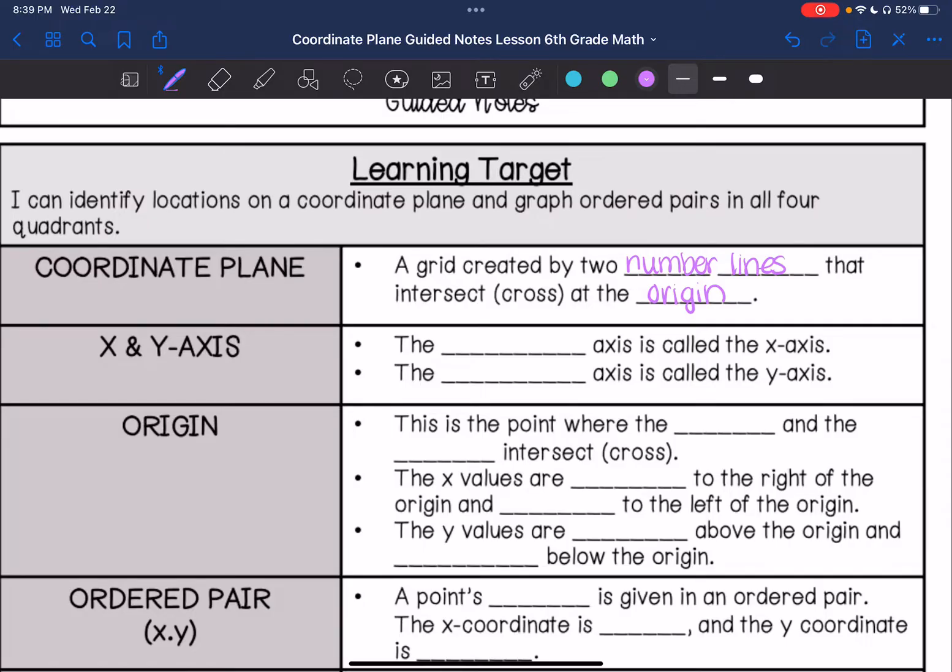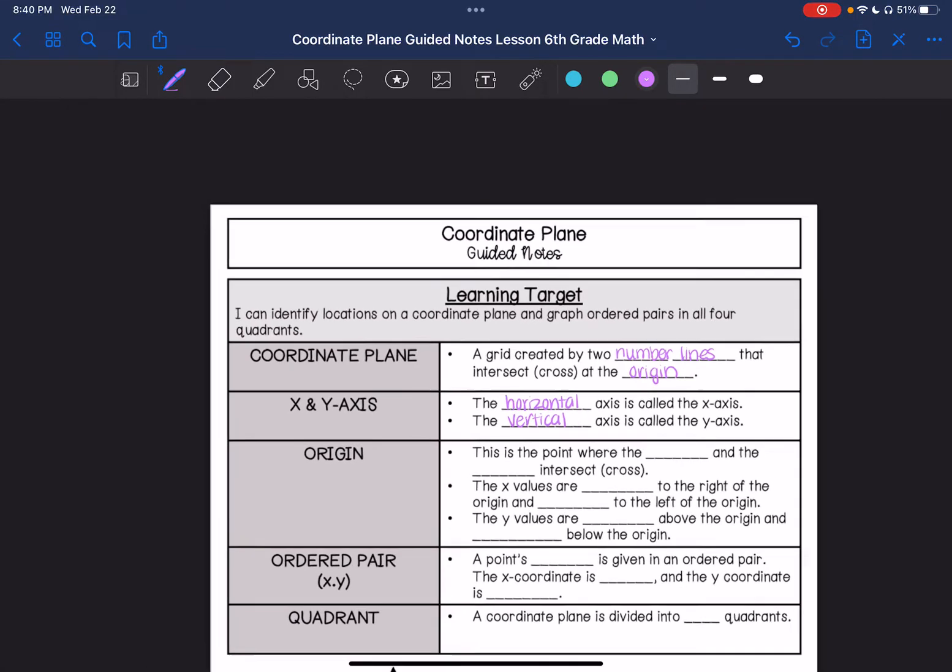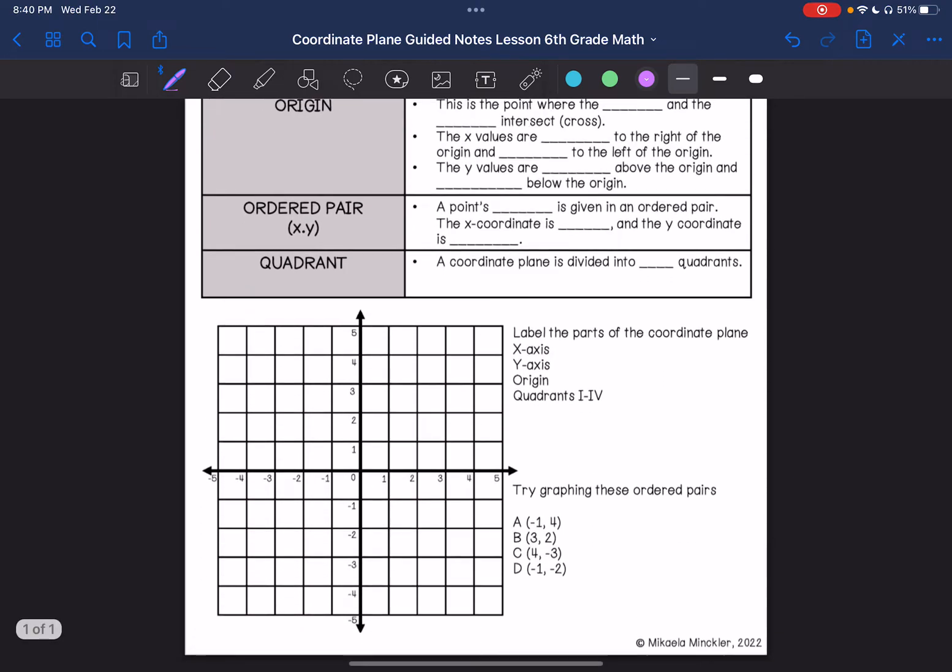On a coordinate plane there are two number lines and we give them a name of an x-axis and a y-axis. The x-axis is the horizontal axis. And the vertical axis is called the y-axis. So if I go down to the coordinate plane, this is the x-axis, this is the y-axis.